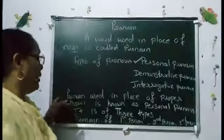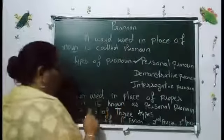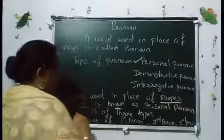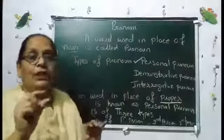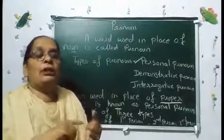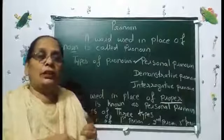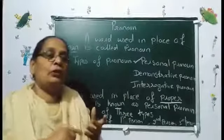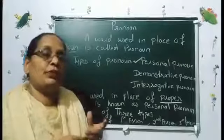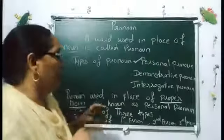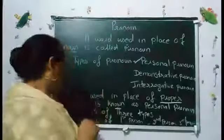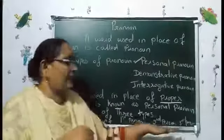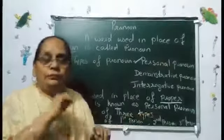Again — a pronoun used in place of a proper noun. Proper noun kya hai? We have learned proper noun — it is the special name of a person, place, or thing. The word used in its place is a personal pronoun. There are first person, second person, and third person pronouns.